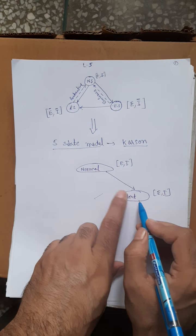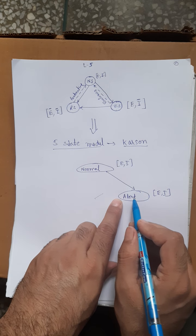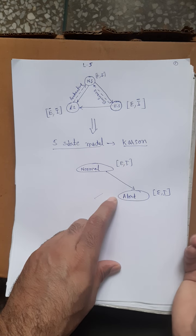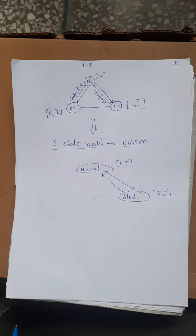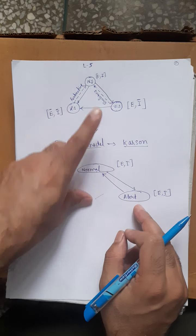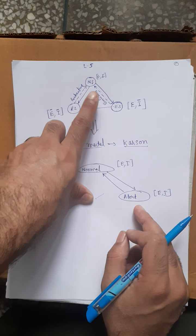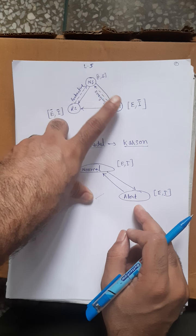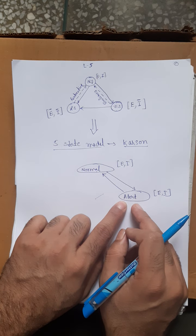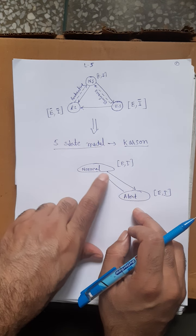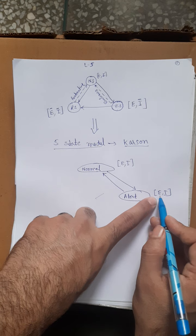The alert state is included to avoid the system going directly from normal to emergency state, especially for non-severe contingencies like slight load changes. Some control action is taken in the alert state to bring the system back to normal, though in both normal and alert states the constraints are satisfied — in alert, they are about to violate.